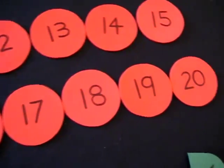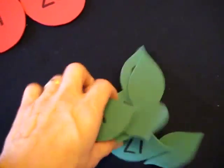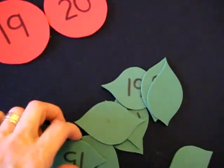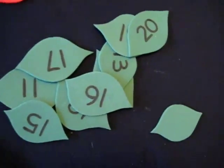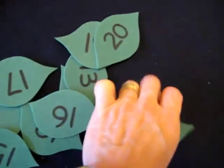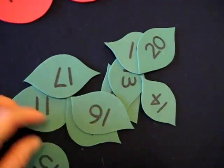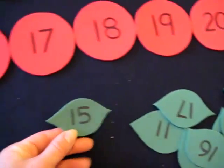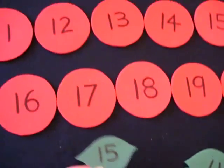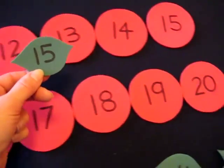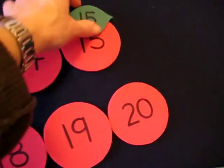And then we have here some little foam pieces shaped into leaves. So what we need to do is add the leaves to the apples. So I ask her to pick one. She doesn't read it yet. I read it to her, 15, and she has to match it to the apple that says 15, and she gets to put it on top like that.